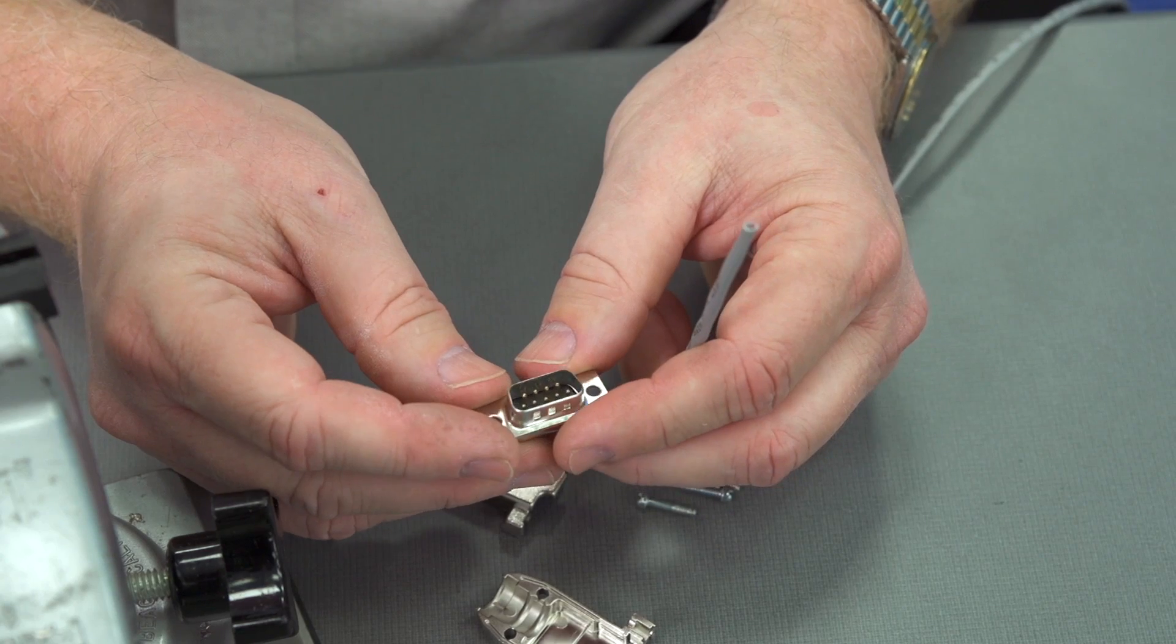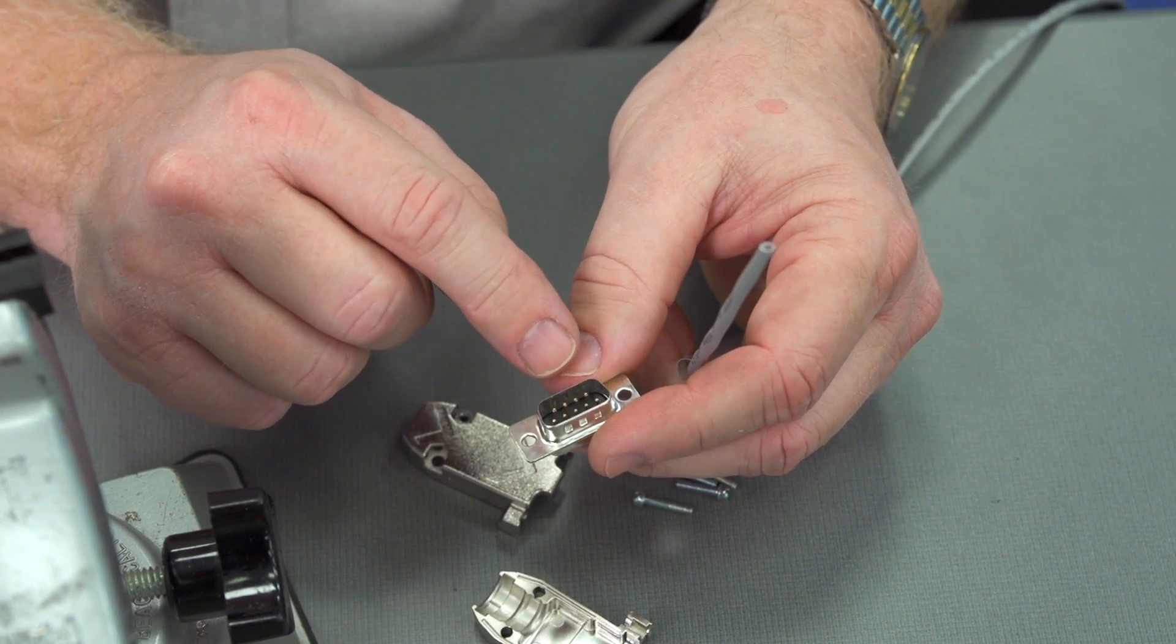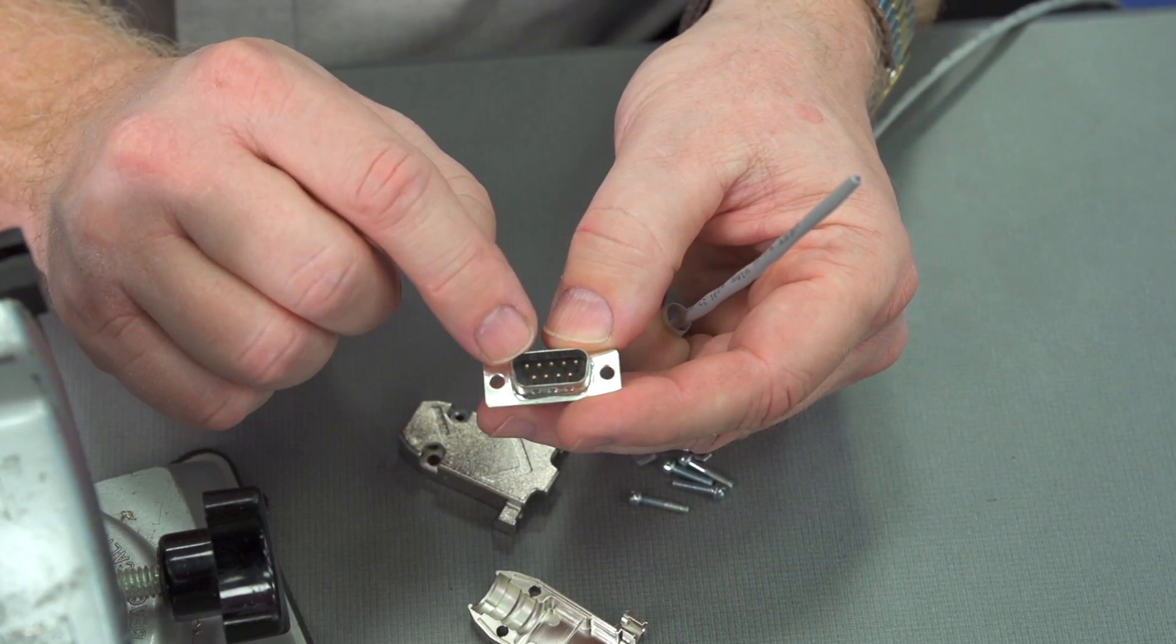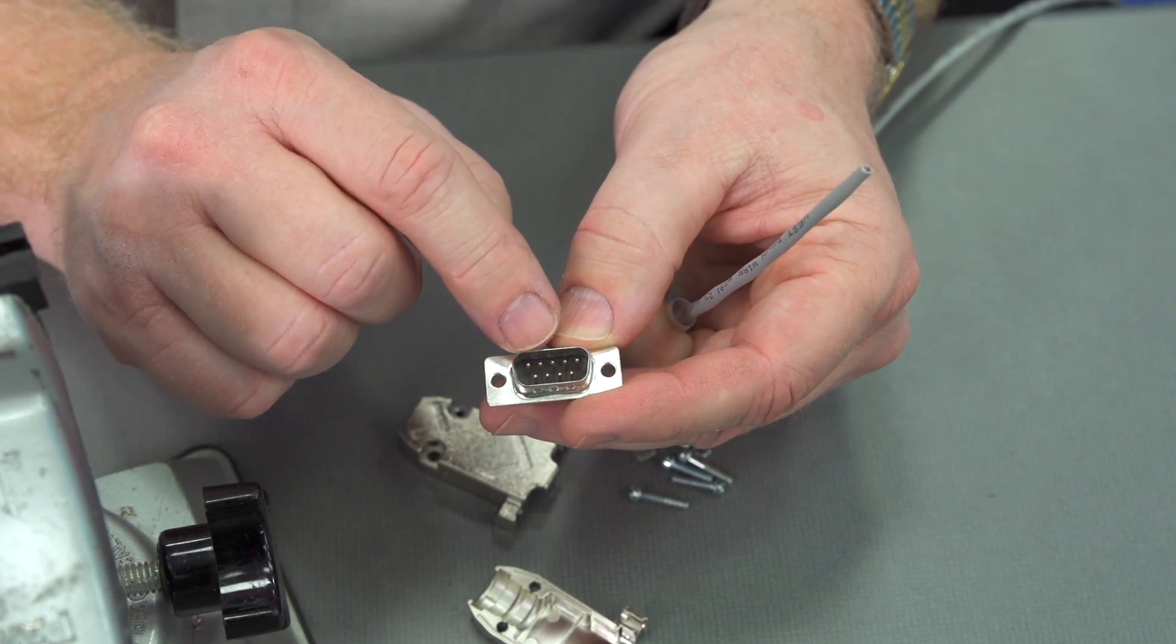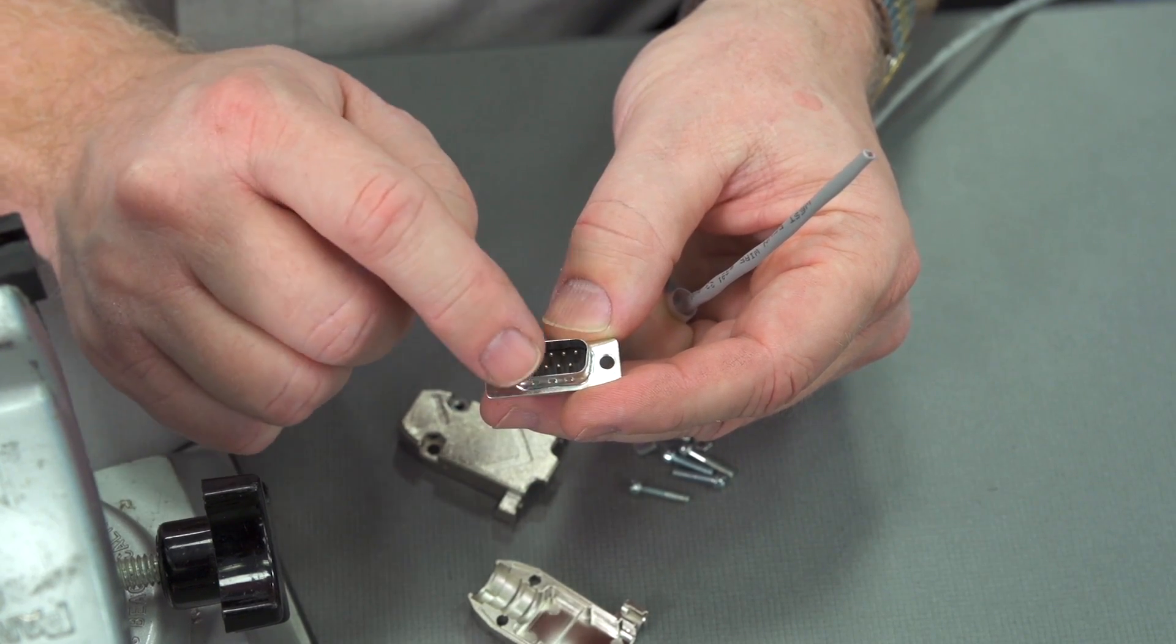We're going to take a look at our connector. What pins are what? They're very difficult to see, but if you look closely, you'll find that the top left here is pin 1, and then you go 2, 3, 4, 5, and then the bottom row is 6, 7, 8, 9.